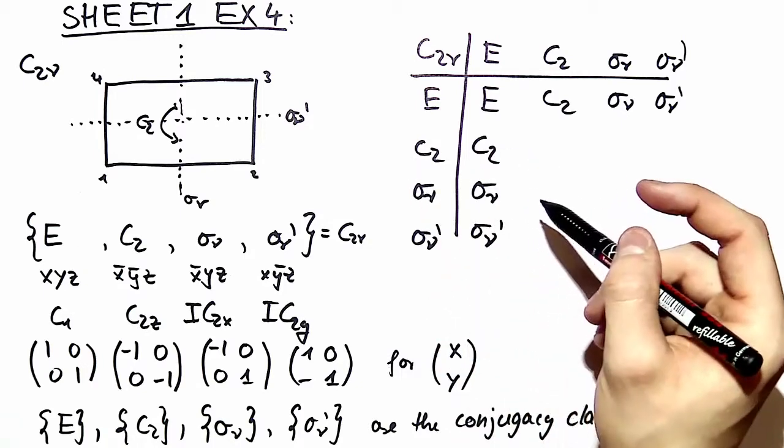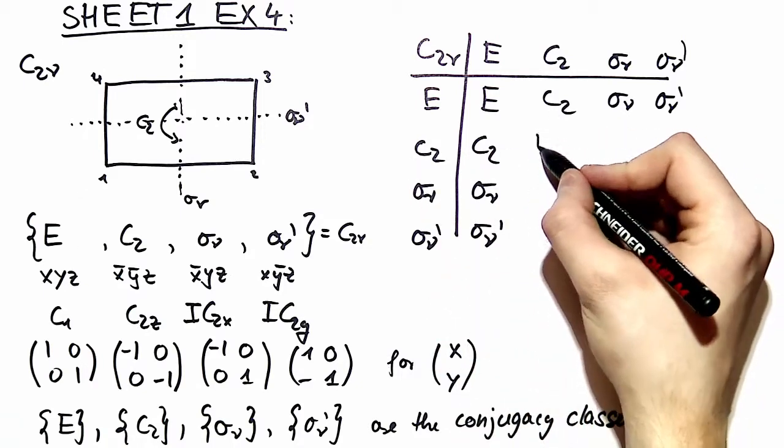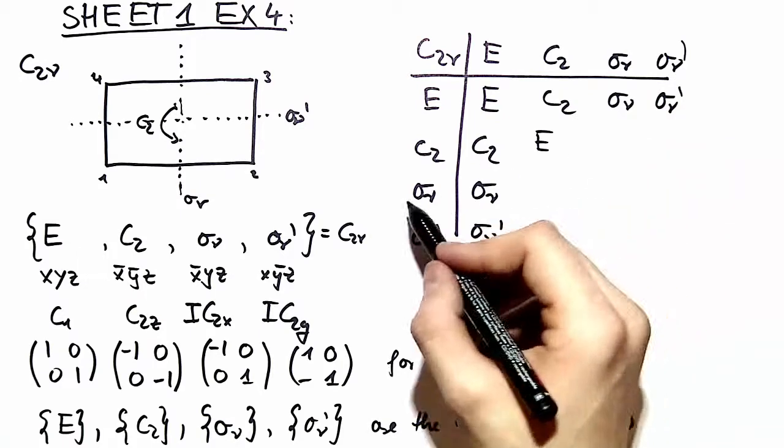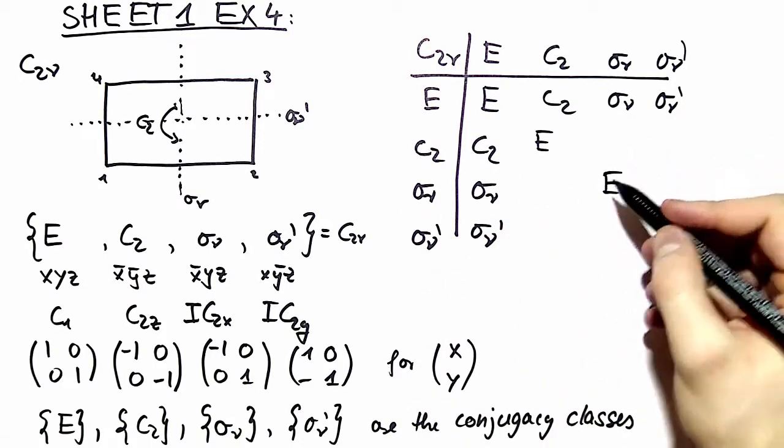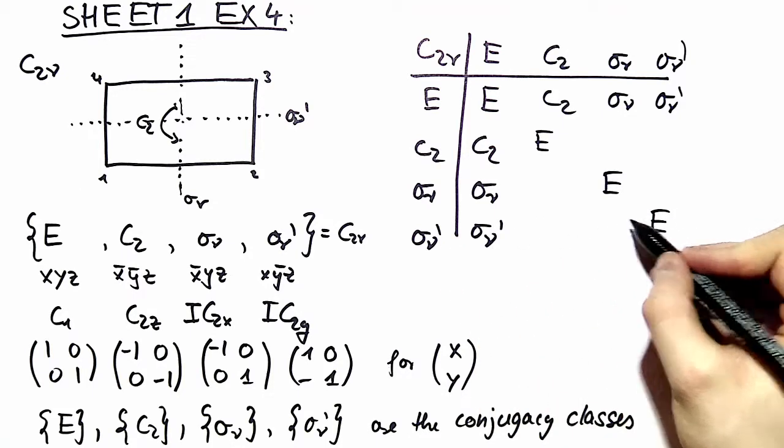Then we see if we rotate two times by pi we arrive at the identity. If we mirror two times at the same mirror plane we arrive at the identity. So this is clear.